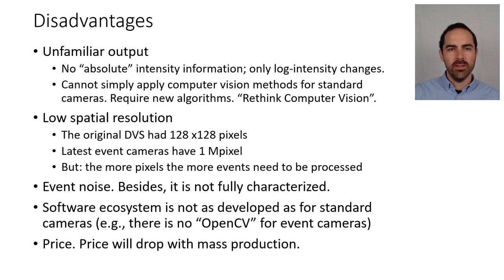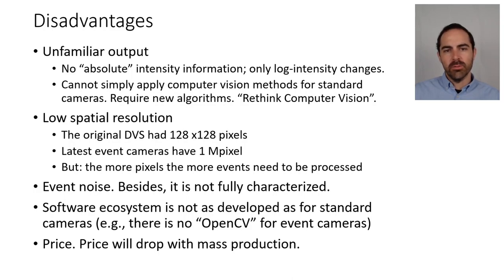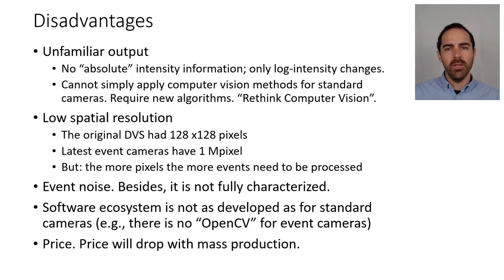Another disadvantage is the lower spatial resolution compared to standard frame-based cameras. The original DVS had a spatial resolution of 128 by 128 pixels. Now the latest event-based cameras have about 1 megapixel resolution, which is sufficient. However, the more pixels you have, the more events need to be processed. For example, generation 4 Samsung or Prophecy cameras can produce up to 1,000 million events per second, which is a huge amount of events to process.